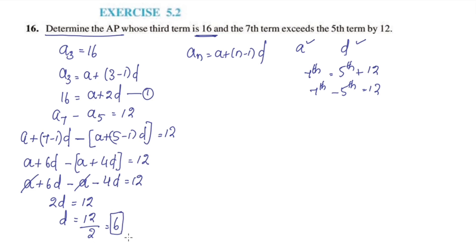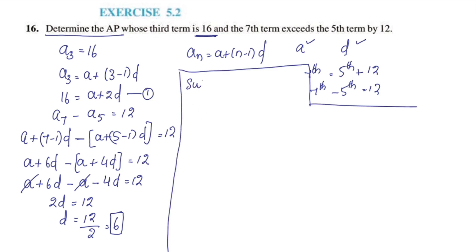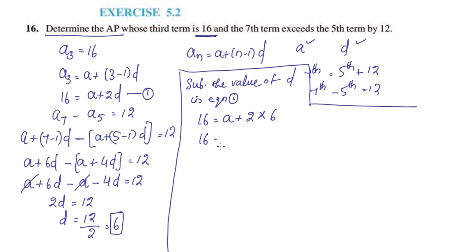Therefore d is equal to 12 divided by 2, which equals 6. Substituting d = 6 into Equation 1: 16 = A + 2 × 6 = A + 12. Transposing: A = 16 − 12 = 4. So A is equal to 4.